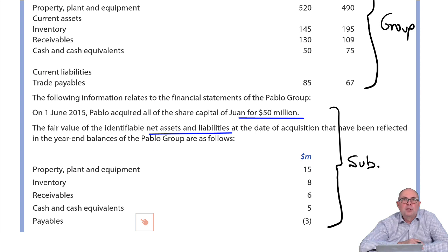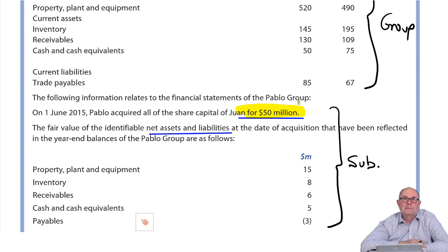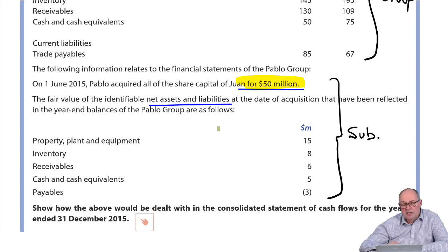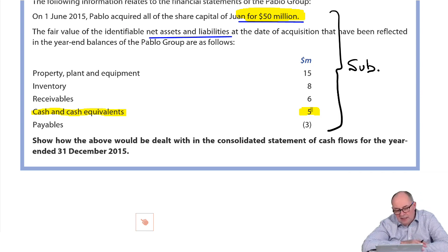The first thing we have to do is record the purchase of the subsidiary. In the cash flow, all we're interested in are movements in cash. When I bought the subsidiary, I had to pay the person who was selling it 50 million — they are now a very rich person and have probably gone to live on the beach. In return, I got all of those assets and liabilities, including the subsidiary's bank balance of five. So from a cash flow perspective, the bad news is I've paid out 50; the good news is I've received five.